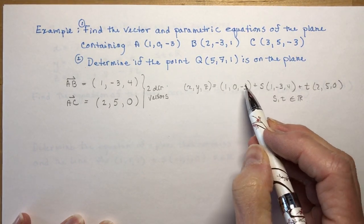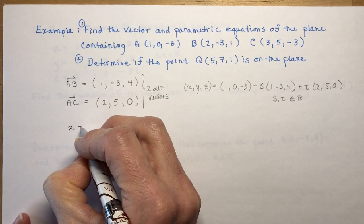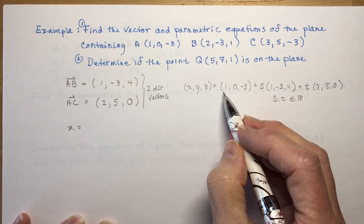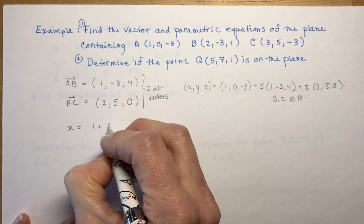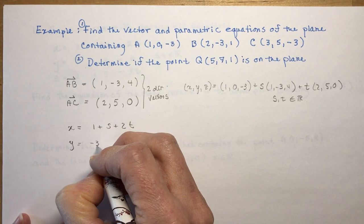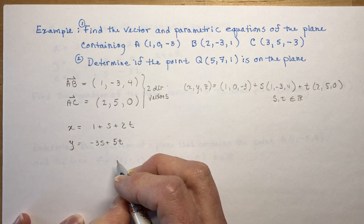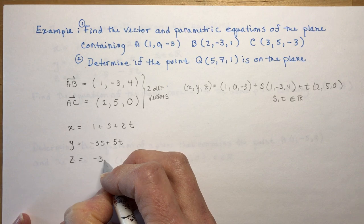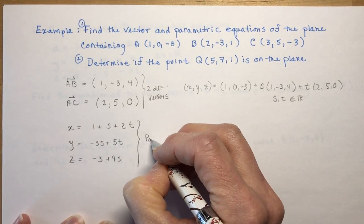Now for the parametric equations: X equals 1 plus S plus 2T, Y equals minus 3S plus 5T, and Z equals minus 3 plus 4S. Those are the parametric equations, and you're halfway done.